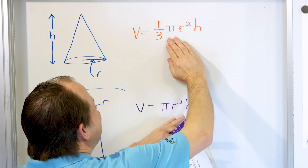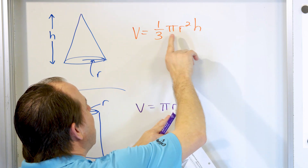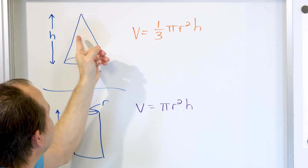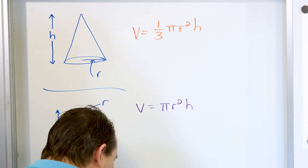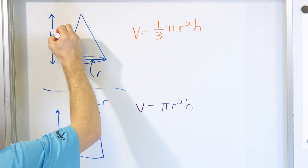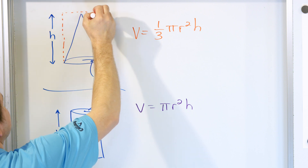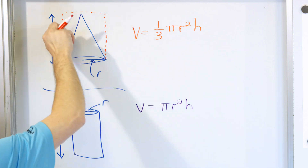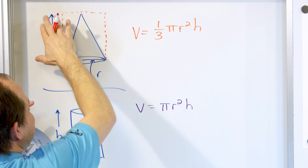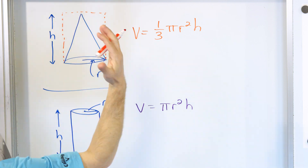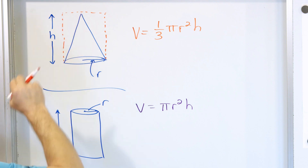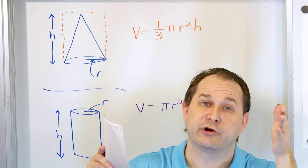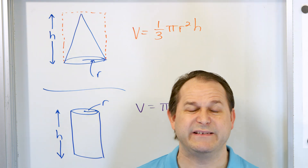Now look at these two equations — they're the same, except for a factor of one-third. The way to view the volume of a cone is to consider it as the volume of the cylinder that would bound it. You can imagine the cone sitting inside a cylinder. That cylinder volume is too large, so we chop it down to a third of its original size, and that is always going to be the volume of the interior cone.